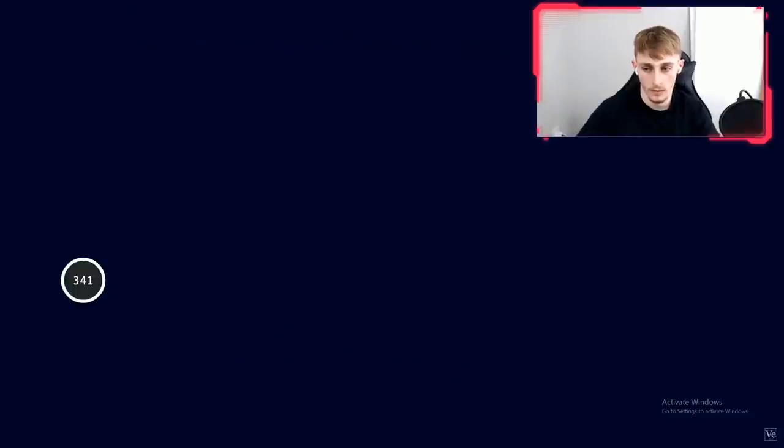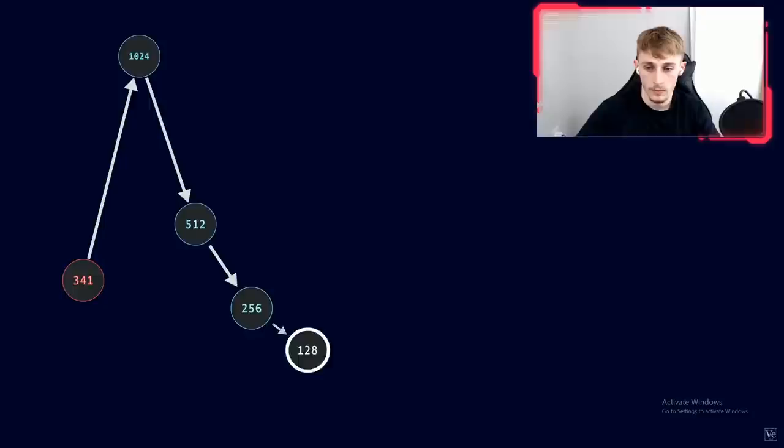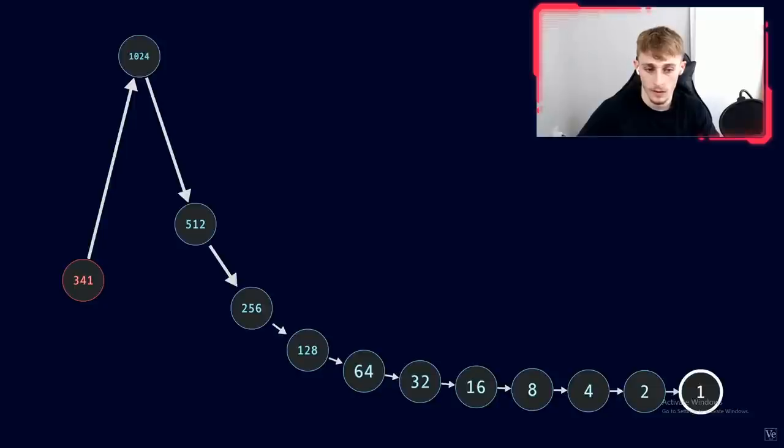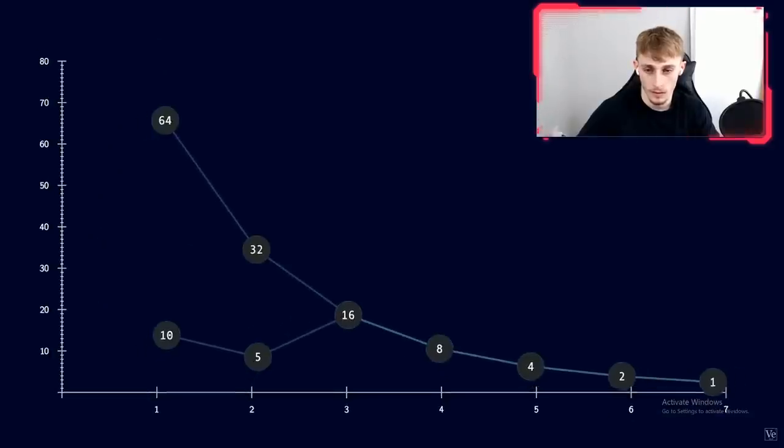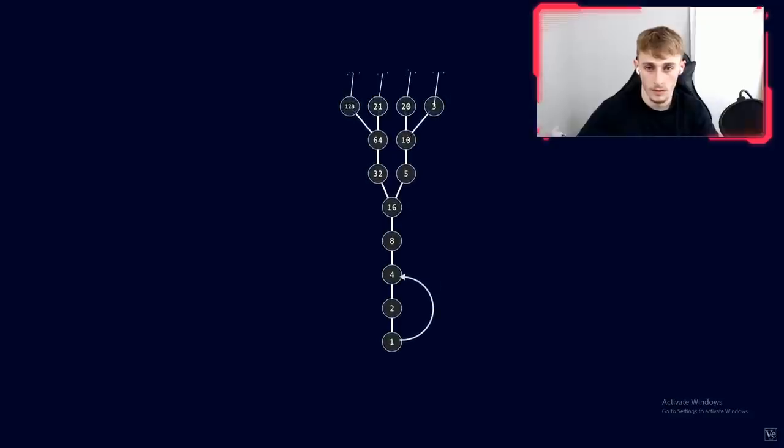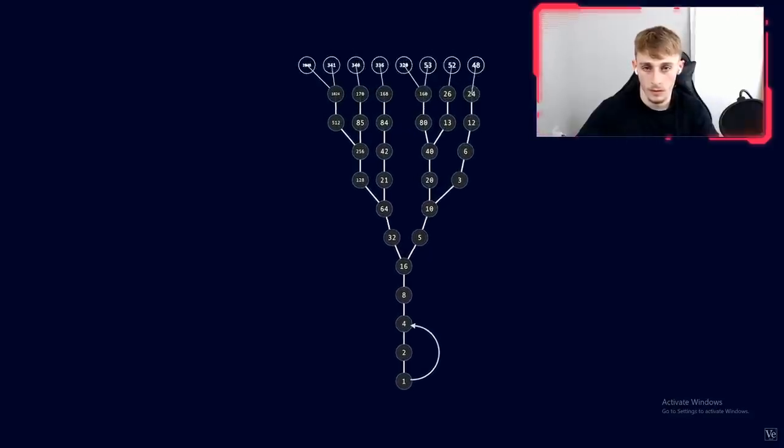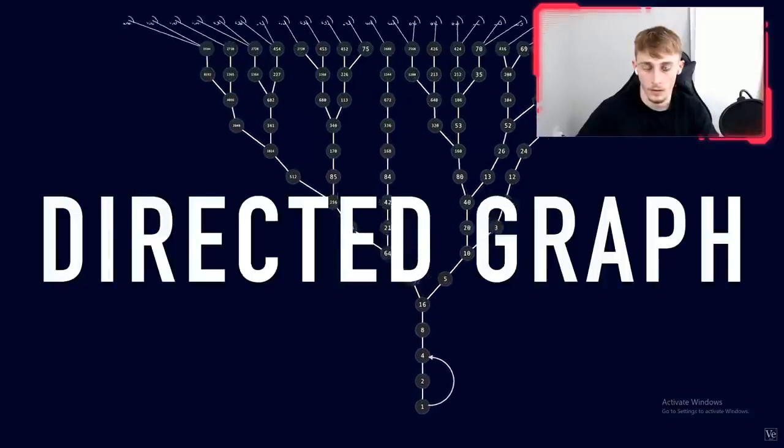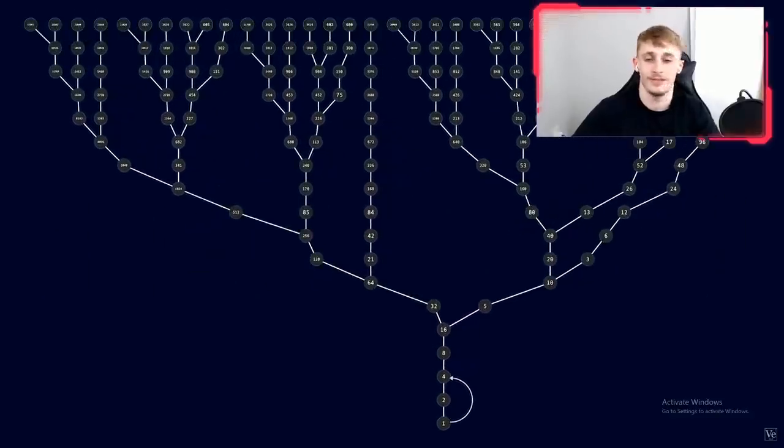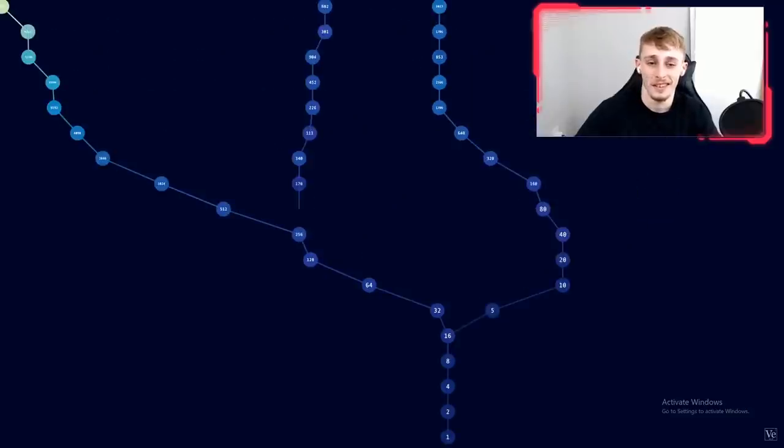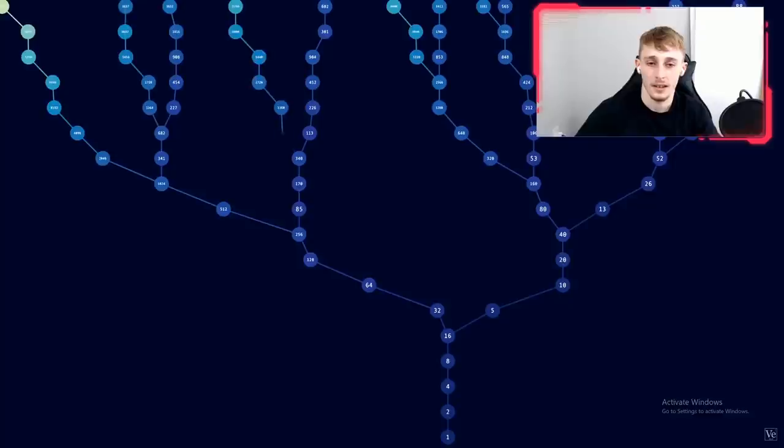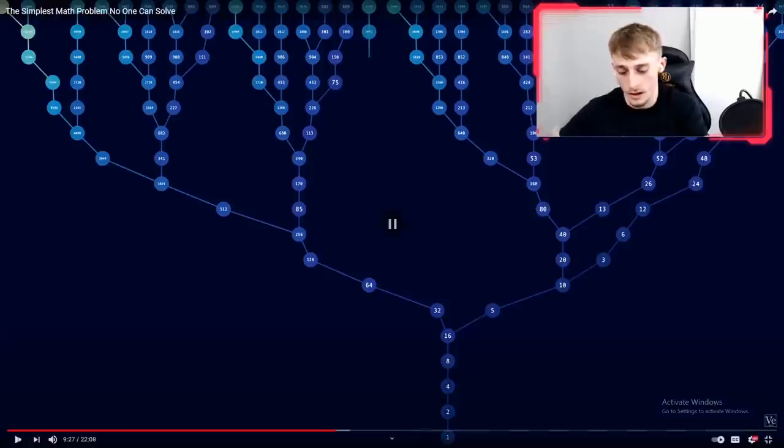Take 341 for example. Multiply by 3 and add 1, you get 1024, which you can divide by 2 ten times in total until you're down to 1. One way to visualize these paths of numbers is to show how each number connects to the next one in its sequence. This is called a directed graph. It looks like a tree or a series of little streams that flow into each other. If the conjecture is true, it means that every single number is connected to this graph.